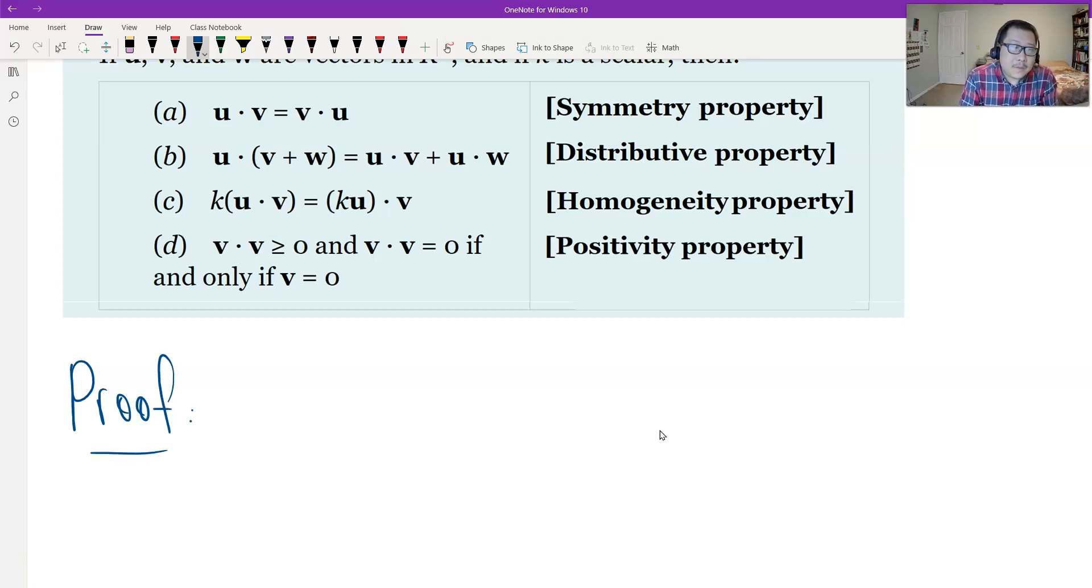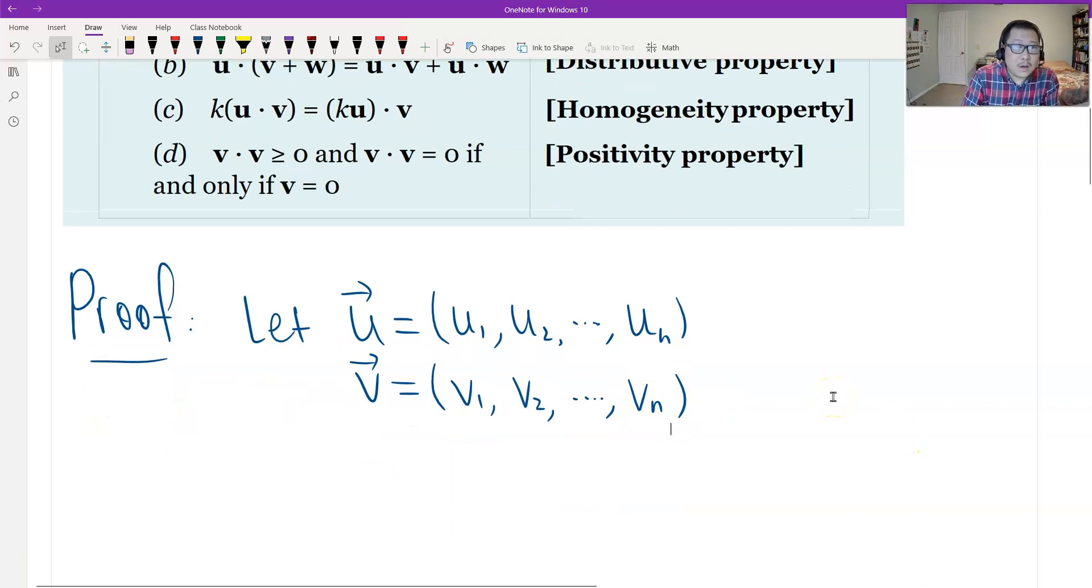First, we need to set up. So, let's set up first. Let U, in n-space, be a vector U1, U2, to UN. V is a vector from V1 to VN to describe. And then one more W. So, let's say W is the vector of W1, W2, to WN.